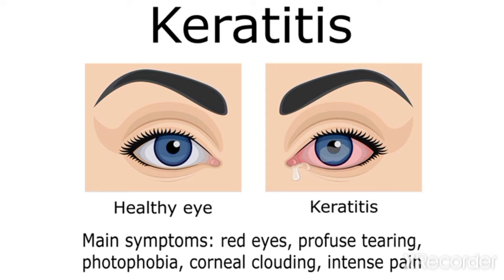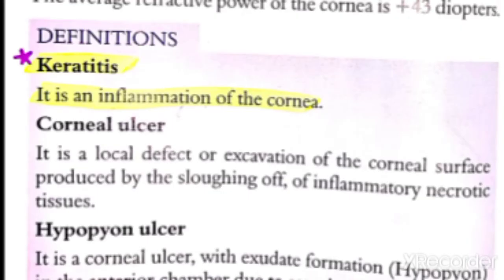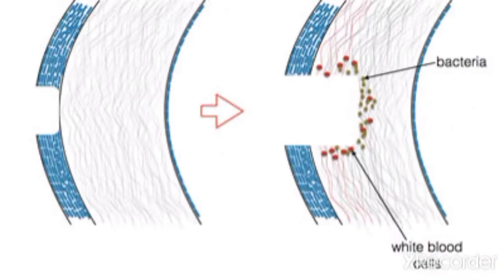Next, the definition of corneal ulcer: a corneal ulcer is a local defect or excavation of the corneal surface produced by sloughing off of inflammatory necrotic tissue. When there is inflammation, cells die and the necrotic inflammatory tissue sloughs off, creating a local defect or excavation which is called a corneal ulcer, as you can see in the figure.